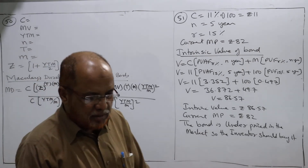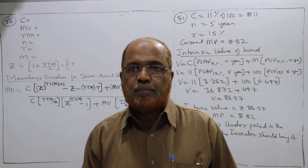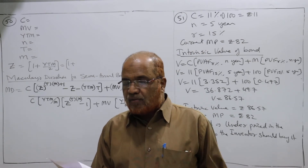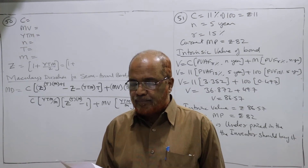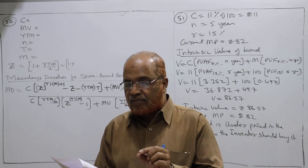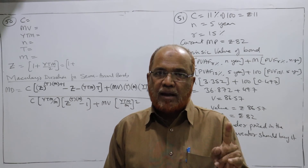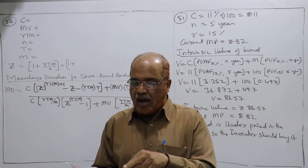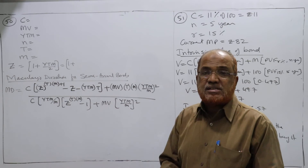Now the last and final problem — problem number 52. A bond with a face value of rupees 1000 has a coupon rate of 8% per annum, so 8% of 1000 is 80 rupees annual coupon interest. It has a maturity of 3 years from now. The going market rate of similar securities is 10% — this is the YTM. Calculate Macaulay's duration when coupon payments are made semi-annually of rupees 40 each every six months. Since it is a semi-annual bond, we must compulsorily apply the formula.